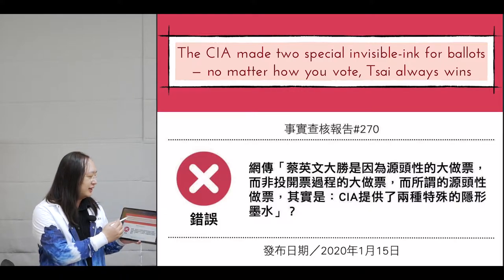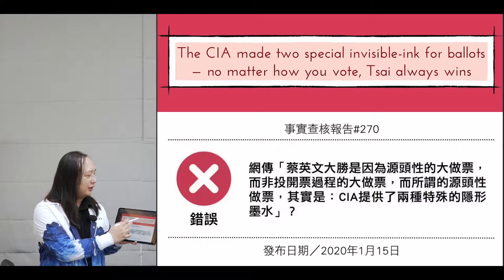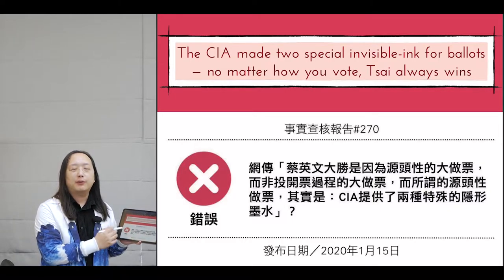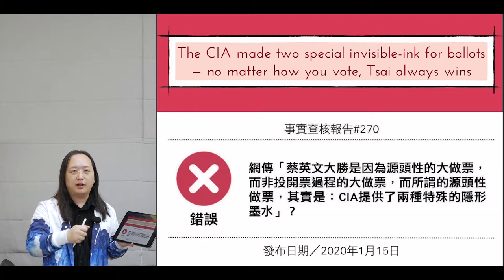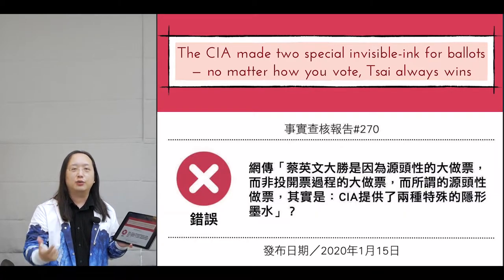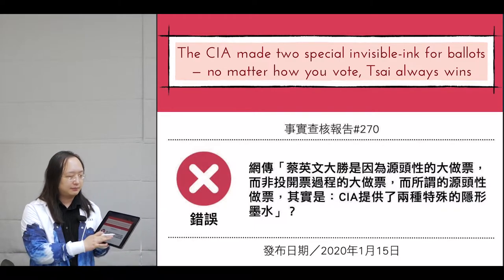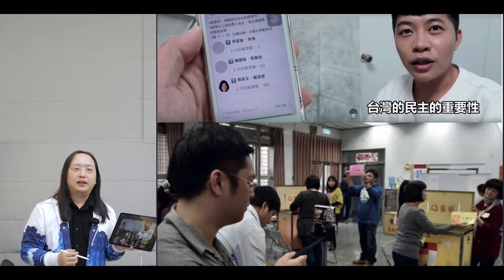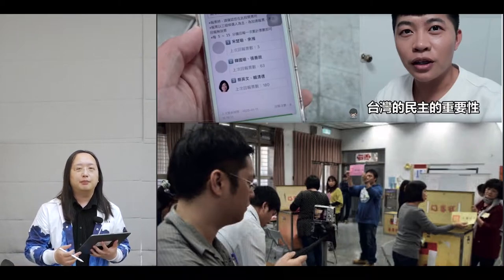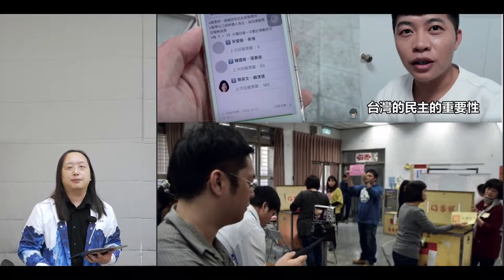There was another disinformation that was rampant just leading up to the presidential election, that said the CIA made two special invisible inks for ballots. So if you vote for President Tsai, your ink will stay. If you vote for other candidates, your ink will disappear. That was a conspiracy theory, and it was rampant because people had not yet made it a culture to live stream the counting process.